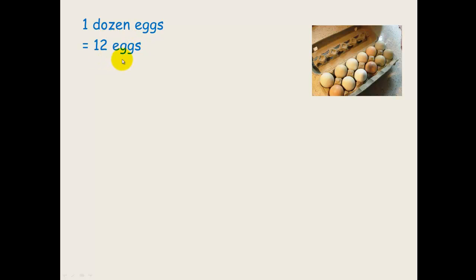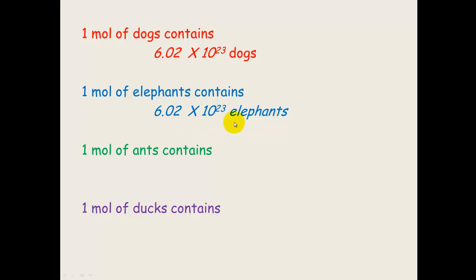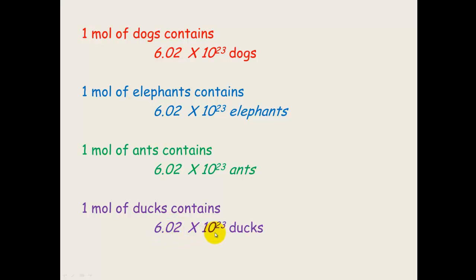Just like one dozen eggs equals 12 eggs, one mole of eggs would be equal to 6.02×10²³ eggs — that's a lot of eggs! One mole of dogs equals 6.02×10²³ dogs. One mole of elephants equals 6.02×10²³ elephants. One mole of ants equals 6.02×10²³ ants. A mole of ducks contains 6.02×10²³ ducks. It doesn't matter what we're dealing with — one mole of any substance will always have 6.02×10²³ of that particle.